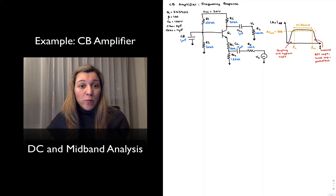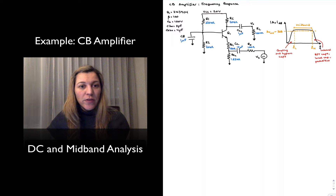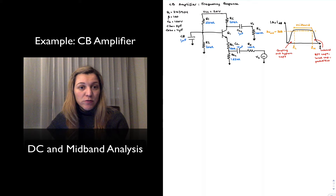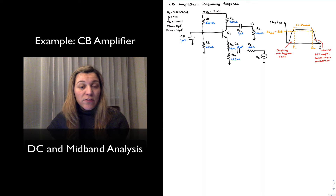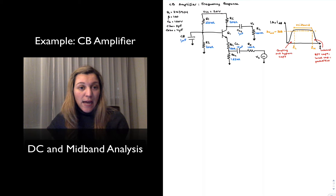We're going to analyze a common base amplifier. First we're going to do the DC and mid-band analysis, so calculating the Q point, and then the small signal voltage gain, input resistance and output resistance. Then we're going to calculate the frequency response, which essentially boils down to finding the low cutoff frequency and the high cutoff frequency, FL and FH.